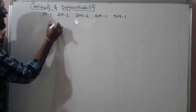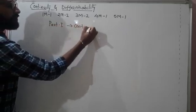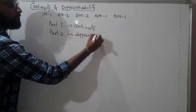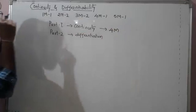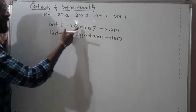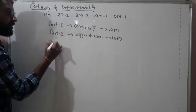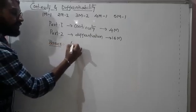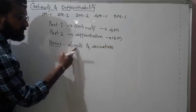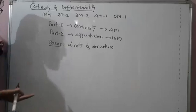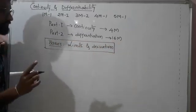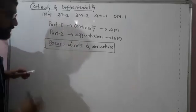This chapter has two parts: part one is continuity and part two is differentiation. From continuity you will get one question of four marks, and from differentiation you will get the remaining 16 marks. To understand the concept of continuity, we need to know the basics from first year's important chapter, that is limits and derivatives. So we are going to continue whatever we learned from first PUC — limits and derivatives — and from that the continuation will be continuity.